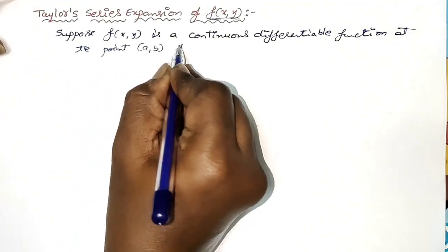Plus 1 by 3 factorial — you should observe that the previous term is in the form of (a minus b) whole square, (a plus b) whole square, so this next term should be in the form of (a plus b) whole cube. So you will get: (x minus a) whole cube into f_xxx at (a, b), plus 3 times (x minus a) whole square into (y minus b) into f_xxy at (a, b), plus 3 times (x minus a) into (y minus b) whole square into f_xyy at (a, b).